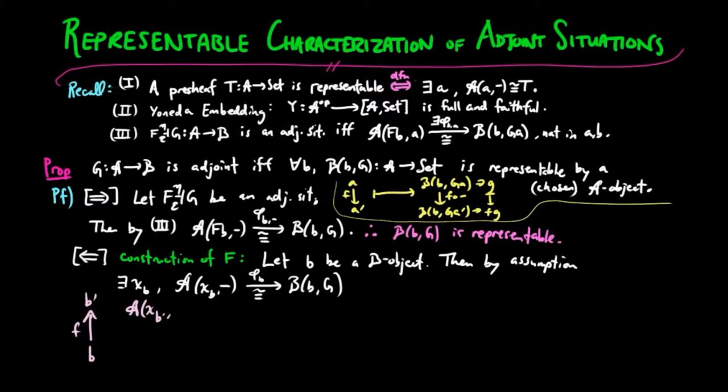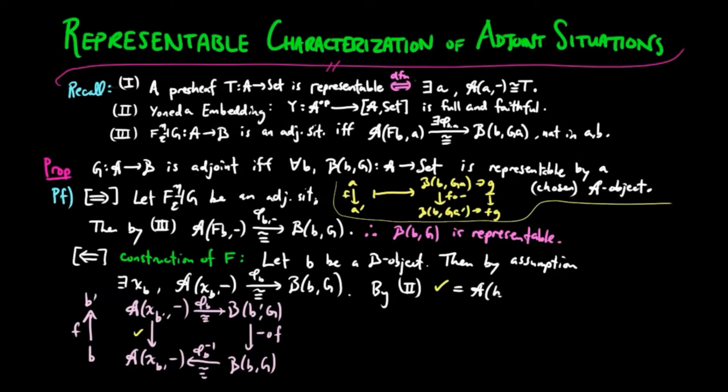Then, given a B morphism F, we can compose by pre-composition of F on the right and by the isomorphisms on the top and the bottom, giving us a morphism between the representables on the left. But by 2 above, this morphism must have come from a unique A morphism HF.